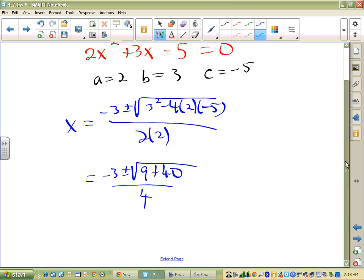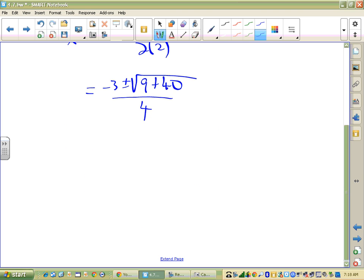And again, this question would have been able to be solved by factoring. So I get negative 3 plus or minus the square root of 49 over 4, which is negative 3 plus or minus 7 over 4.